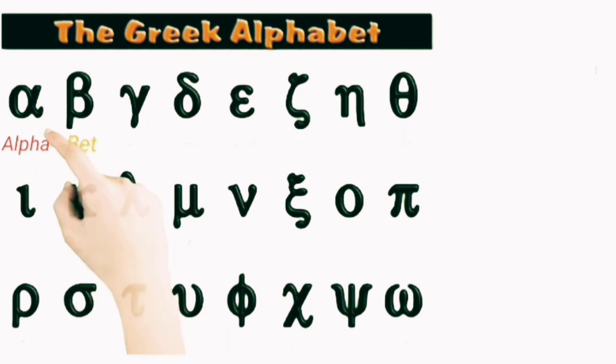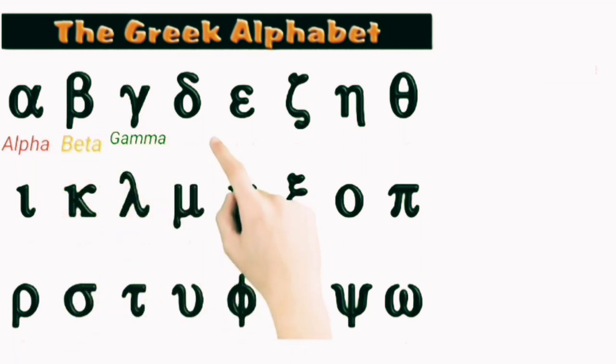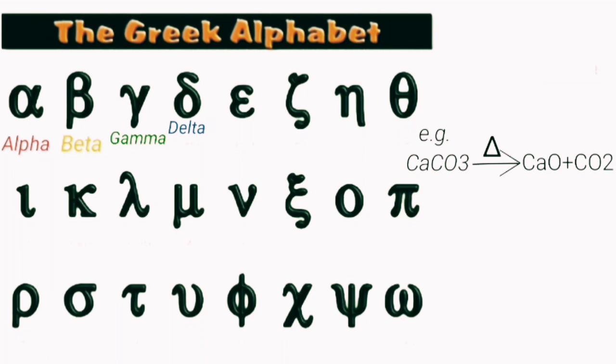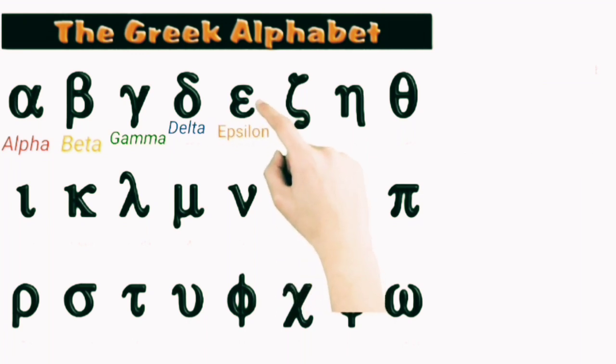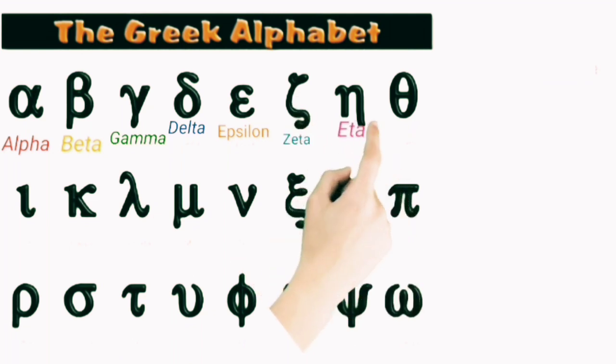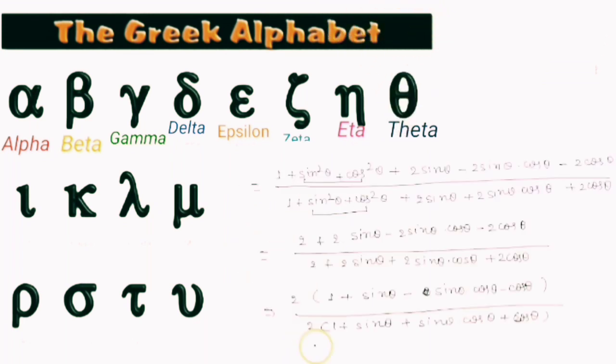This is alpha, this is beta, gamma, delta. This is sometimes written in the upper line of chemical equations to show that heat is involved in the reaction. And this is epsilon, used to symbolize permittivity of medium. This is zeta and eta, and this is theta. As we know, theta is used to show any angle in trigonometry.